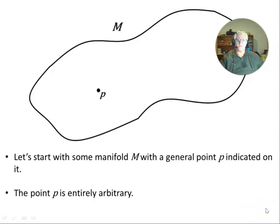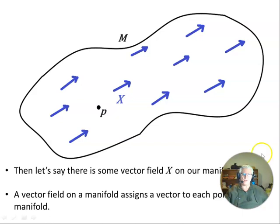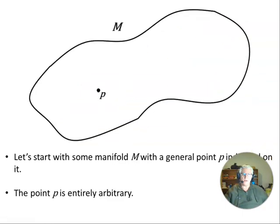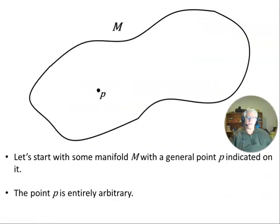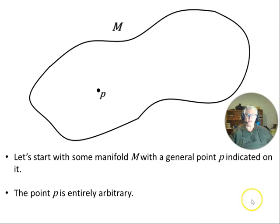Here's our manifold. I've picked a point P on it — a manifold M with a general point P indicated. The point P is entirely arbitrary; there's nothing special about it.